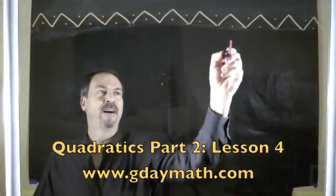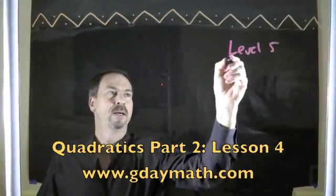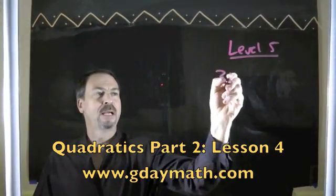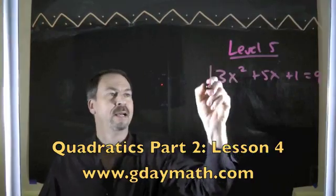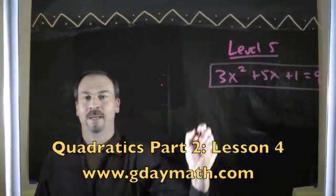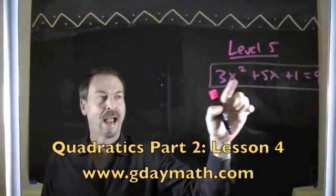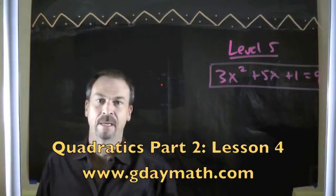Alright, we're now ready for level 5. Here it is. Bring it on. Something like 3x squared plus 5x plus 1 equals 9. There, I've done it to us. I've given us an odd number in the middle, and I've put a number in front of the x squared finally.